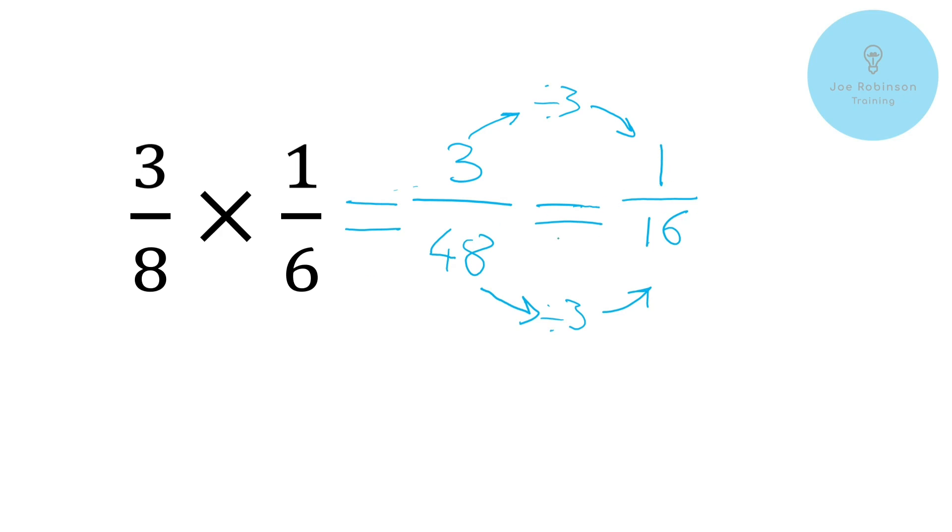Now you can imagine that at this point trying to go back to our pizza analogy it would definitely still work. However the challenge that we've now got is trying to visualize what one sixth of three eighths looks like or vice versa. It kind of starts to perhaps get a little bit difficult to show that in a kind of a visual way. And so being able to do the calculation just as we are here with some pretty basic maths is really important and valuable.